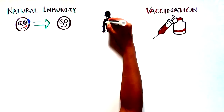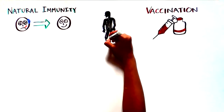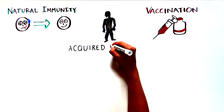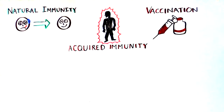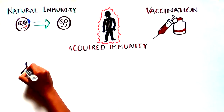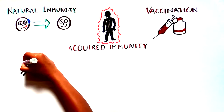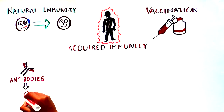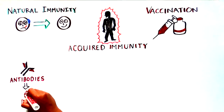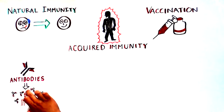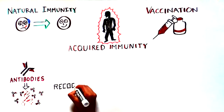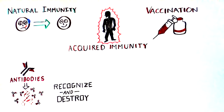In both cases, our bodies generate a type of immunity called acquired immunity, which is like a protective shield for our bodies against outside invaders — similar to a moat around a castle. Acquired immunity can give us long-lasting immune protection through antibodies, proteins that help our immune systems recognize and destroy pathogens.